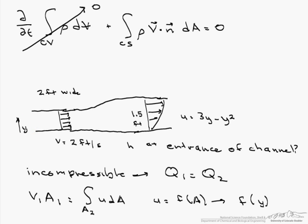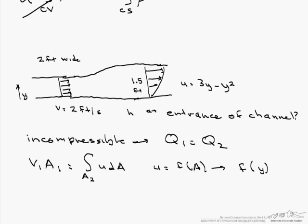So the first thing that we will do is we will define our dA in terms of dy. So since the width is constant, dA is w dy.